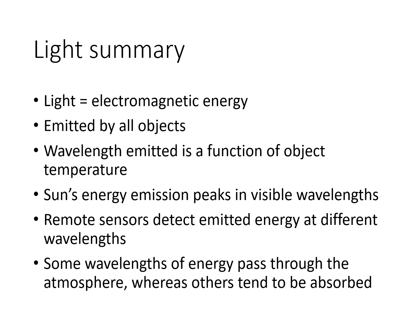In summary: light is electromagnetic energy emitted by all objects as a function of their temperature. The sun's energy emission peaks in the visible wavelengths, and that's why they're visible. Remote sensors detect emitted energy at different wavelengths, and some wavelengths of energy pass through the atmosphere while others tend to be absorbed.